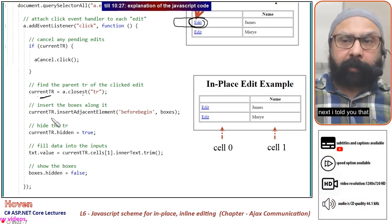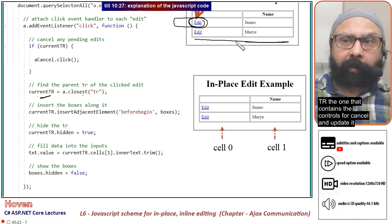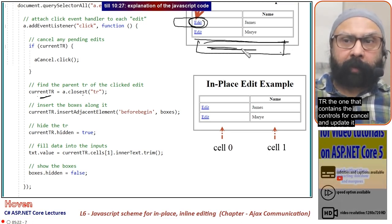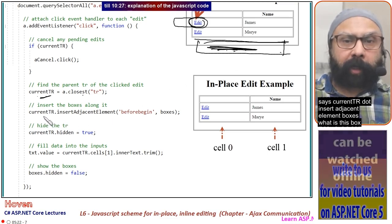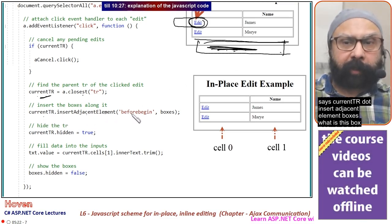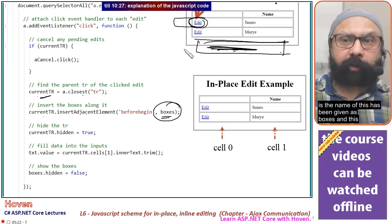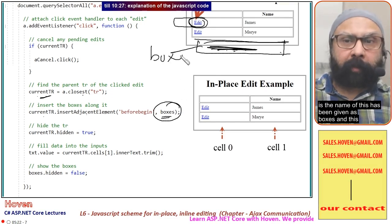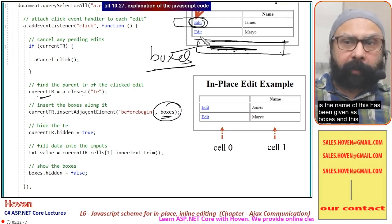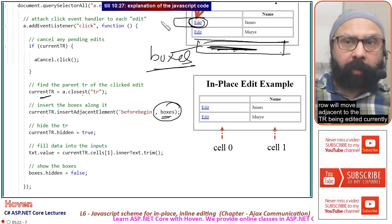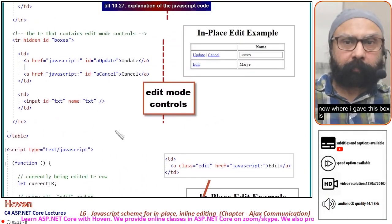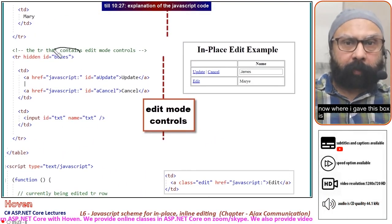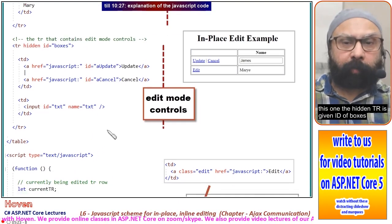Next, this hidden tr containing the controls for cancel and update—it says currentTr.insertAdjacentElement(boxes). What is boxes? The hidden tr has been given the ID boxes. This row will move adjacent to the tr being edited.